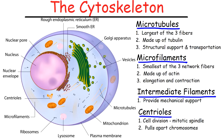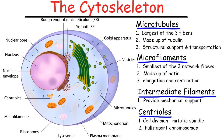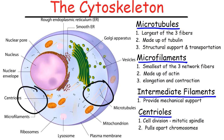Now let's talk about the cytoskeleton. The function of the cytoskeleton is to maintain the shape of the cell and provide structural support. The cytoskeleton consists of a network of three fibers: the microtubules, the microfilaments, and the intermediate filaments. The microtubules is the largest of the three fibers, the microfilaments is the smallest, and the intermediate filaments are in between — they provide mechanical support to the cell.